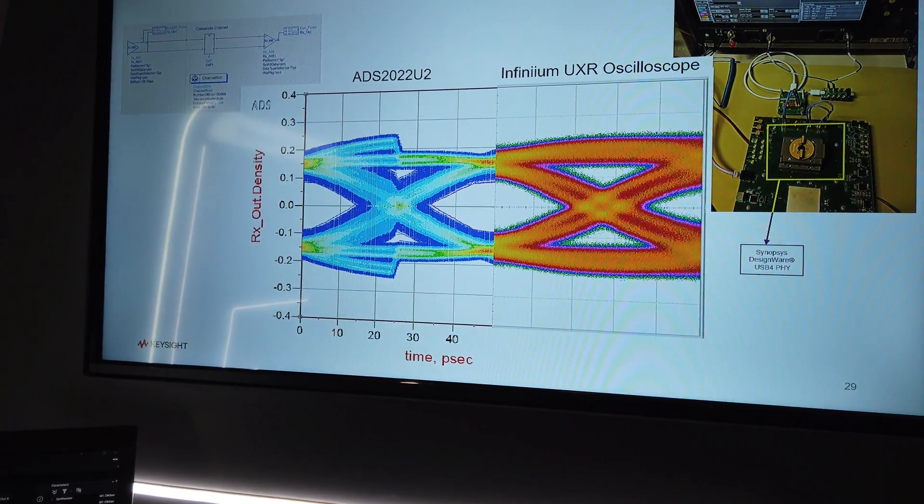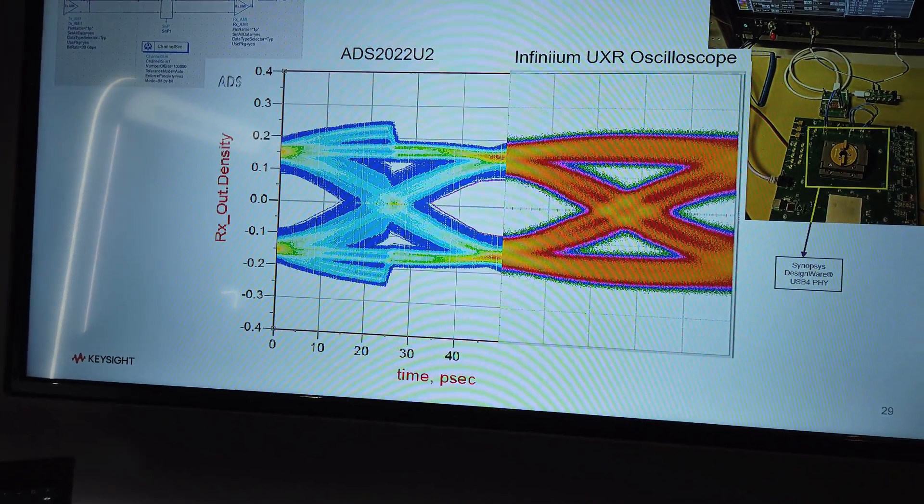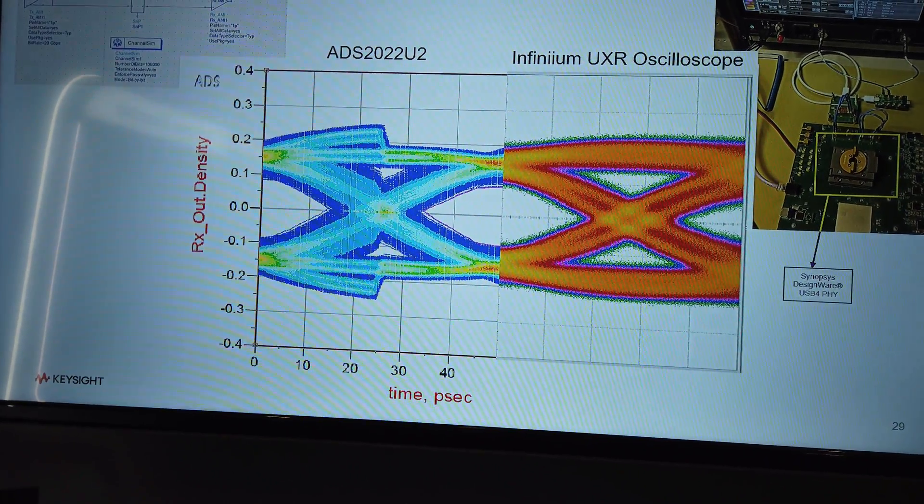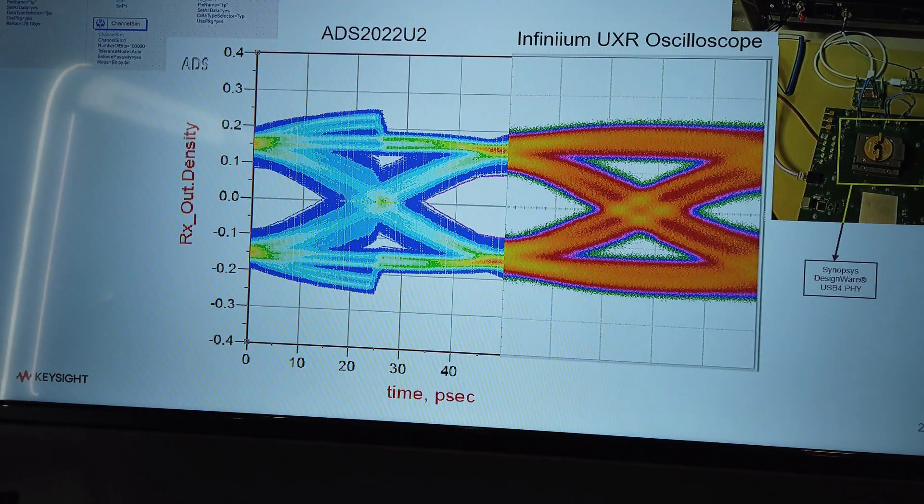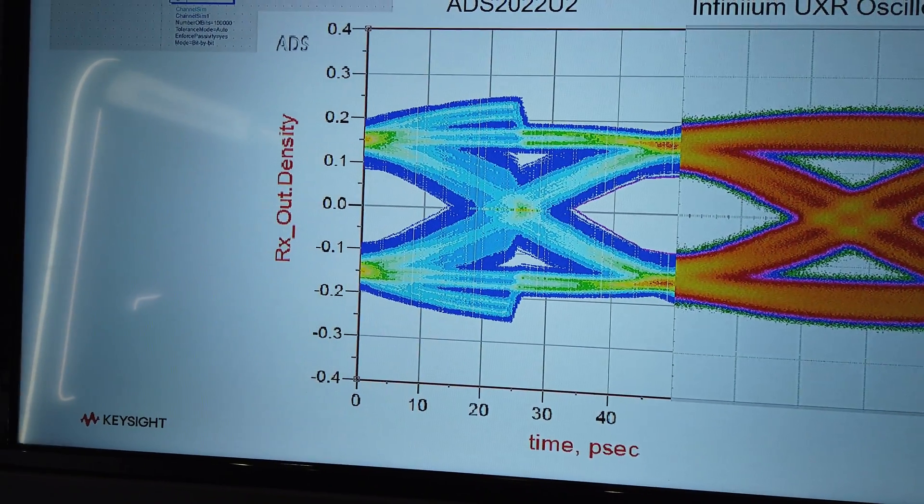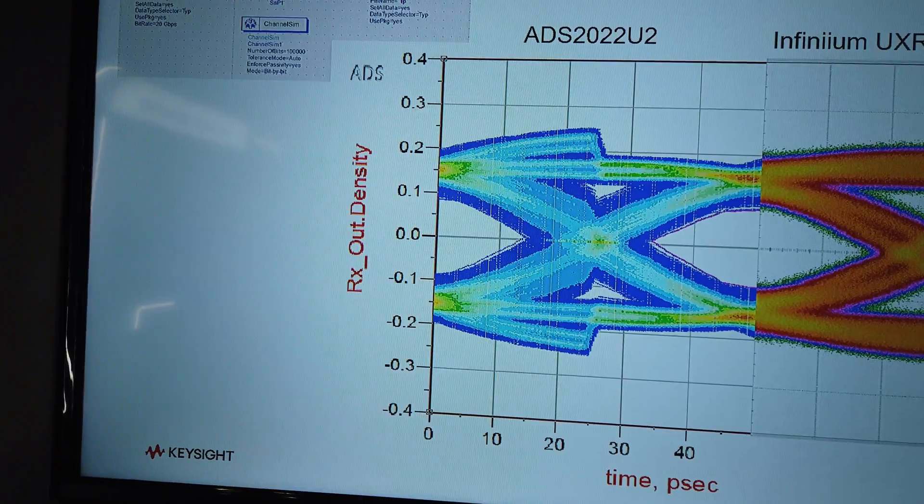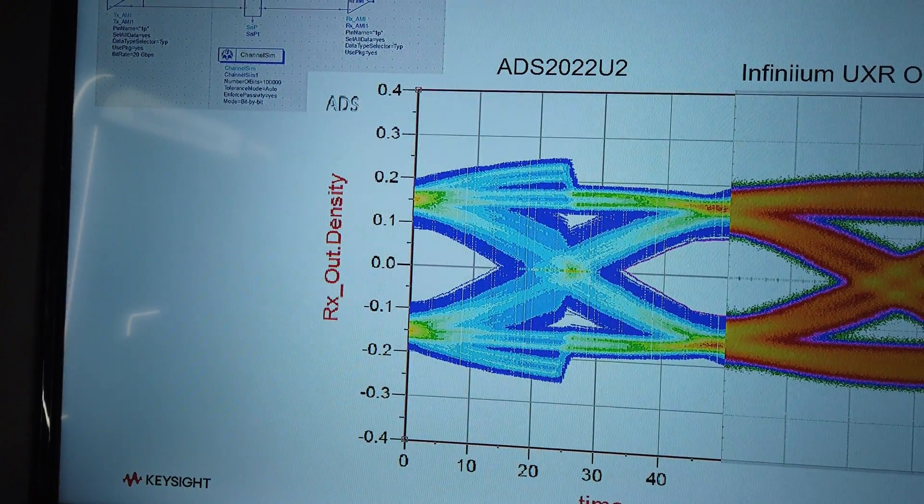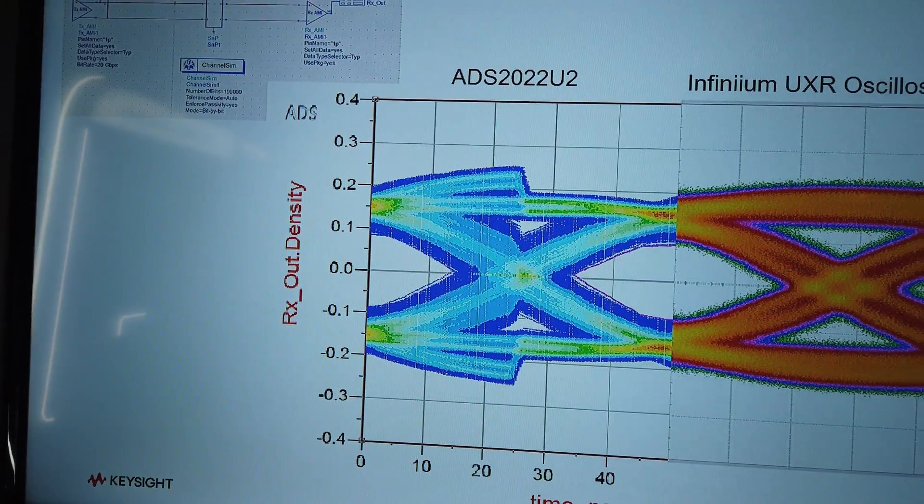This is a great question. As you can imagine, time is money and fab is expensive. On the left is actually a simulation with ADS using your IBIS AMI models that shows the eye on a long channel test case.